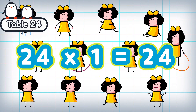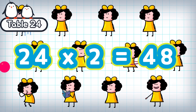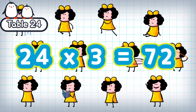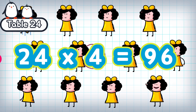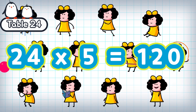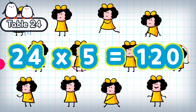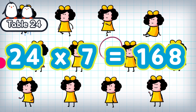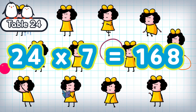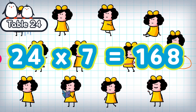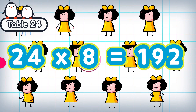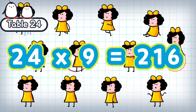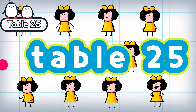24 times 4 is 96. 24 times 5 is 120. 24 times 6 is 144. 24 times 7 is 168. 24 times 8 is 192. 24 times 9 is 216. Table 25.